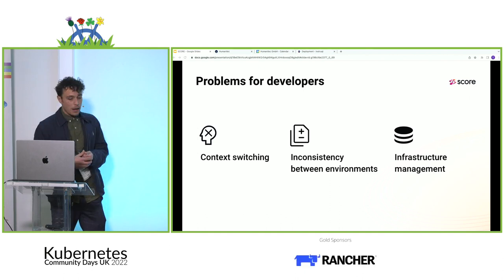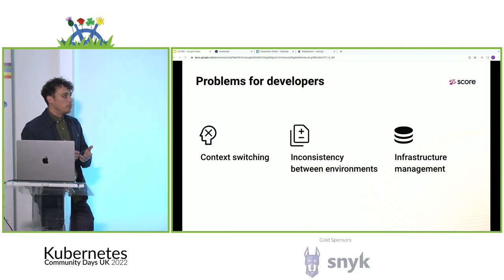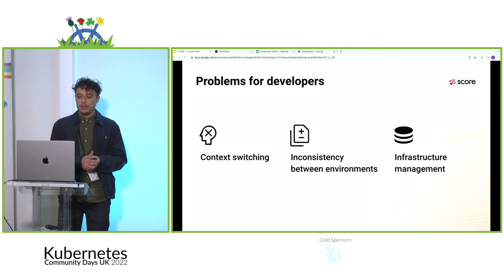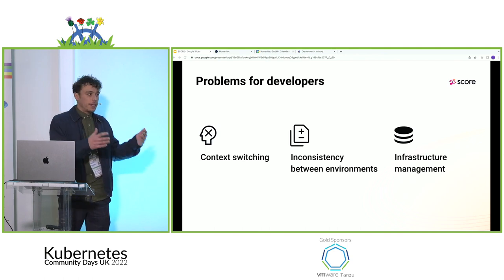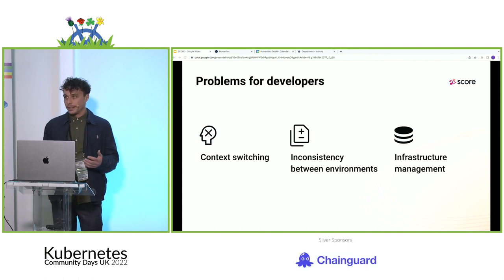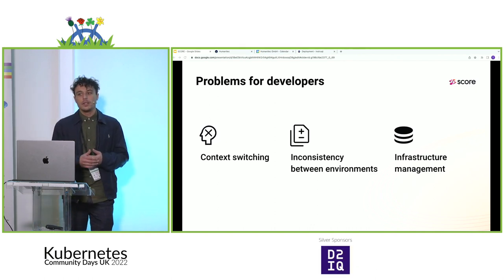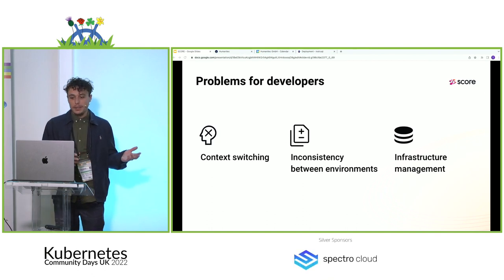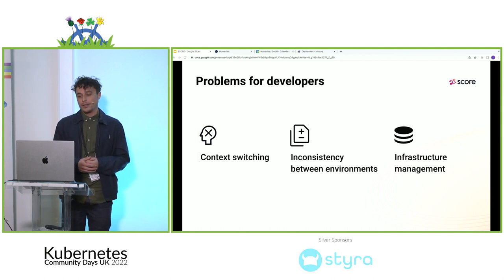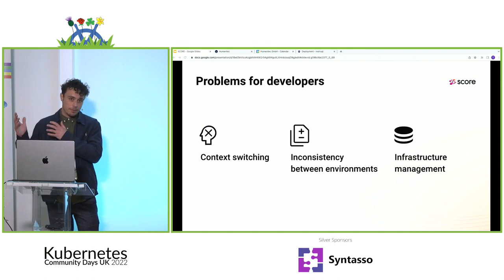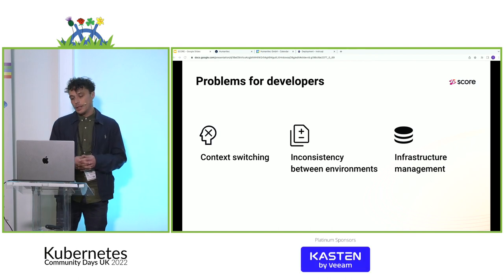Inconsistency between environments. The use of immutable container images and infrastructure as code has gone a long way to help consistency between environments, but it's not the be-all and end-all of solving those environment inconsistencies when it comes to workloads. Problems certainly still arise when you're using Docker Compose for local development and then need to translate that into a production workload using production resources, starting to interact with a whole range of enterprise-grade tooling.